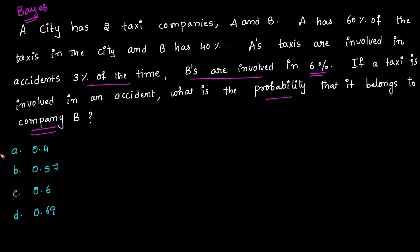Looking at the problem, what we need to calculate is the probability that the taxi belongs to company B given that it is involved in an accident. We can solve this problem using two approaches.